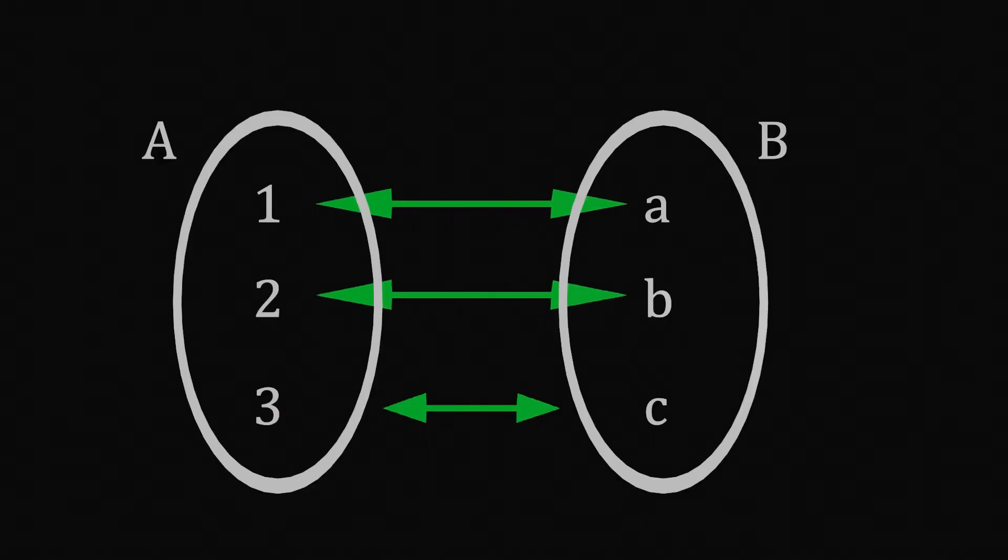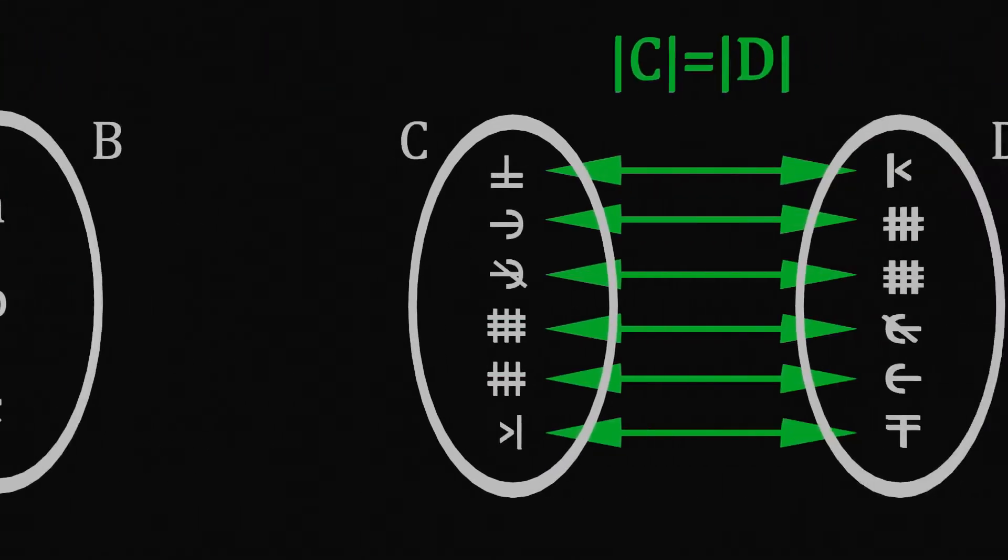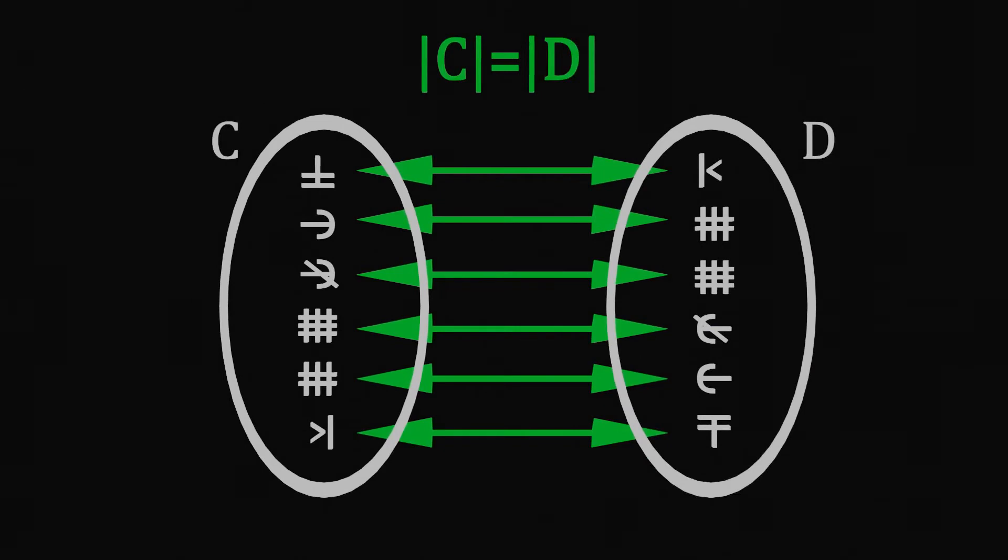Two sets have the same cardinality if there is a one-to-one correspondence between the elements of the two sets. We don't care what the elements of the sets are, as long as there is a one-to-one correspondence between them, we know that their size is the same.